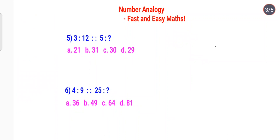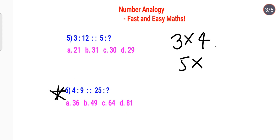Let's look at the next one: 3 is to 12. This is similar to the first question — 3 multiplied by one number ahead of 3 gives 12. So 5 will be multiplied by one number ahead of 5, which is 6. That gives 30, so option C is your answer.